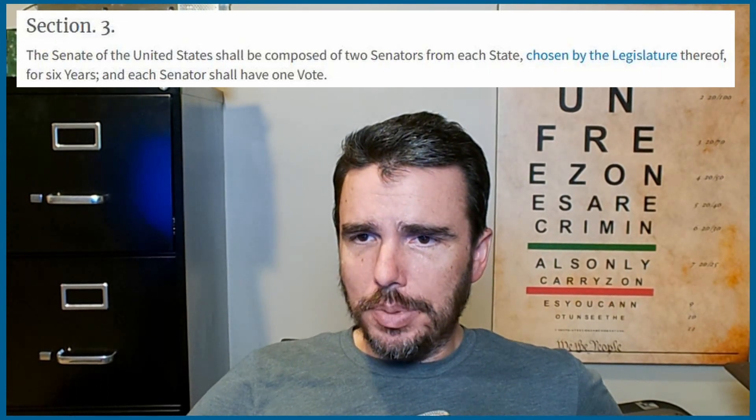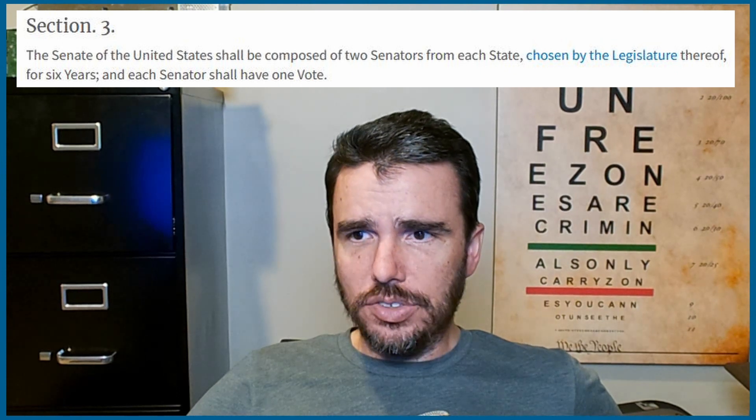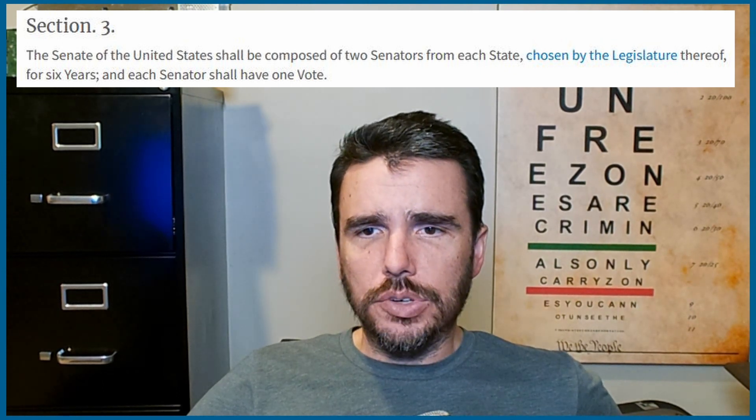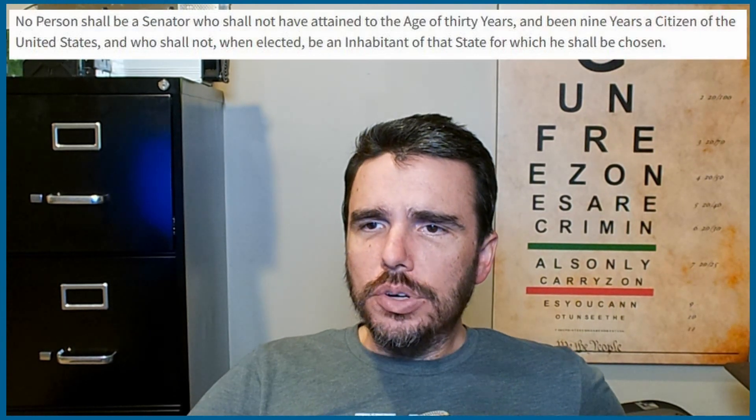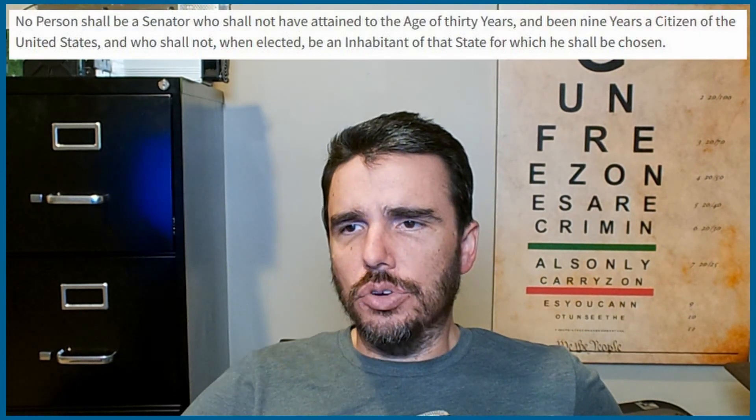Section Three establishes that the Senate shall be composed of two senators from each state, originally chosen by the state legislature for six years, each having one vote. This has since changed — senators are now elected by the people, like House representatives. No person shall be a senator who has not attained the age of 30 and been nine years a citizen of the U.S., different requirements than for the House.